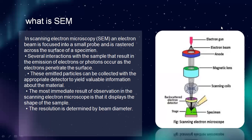You can see the diagram. This is an electron gun, this is an electron beam, this is an anode, this is a magnetic lens, this is a scanning coil, this is a backscattered electron detector, this is a stage, and this is a specimen.